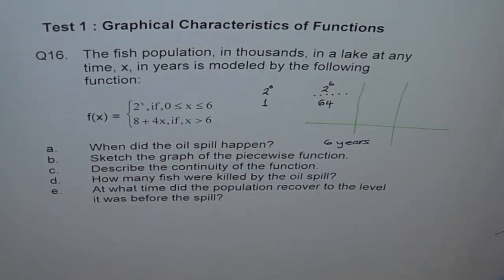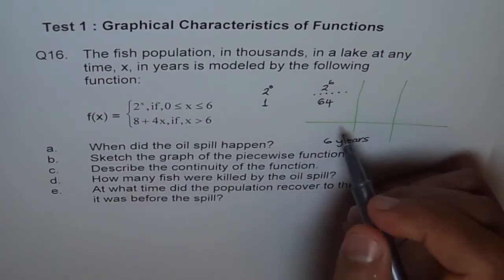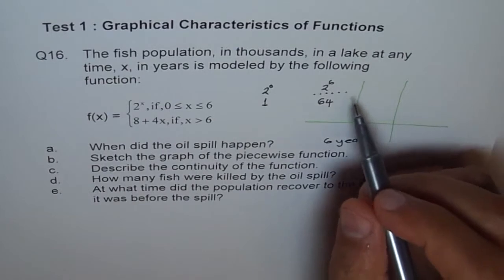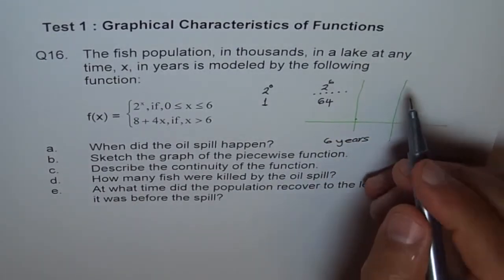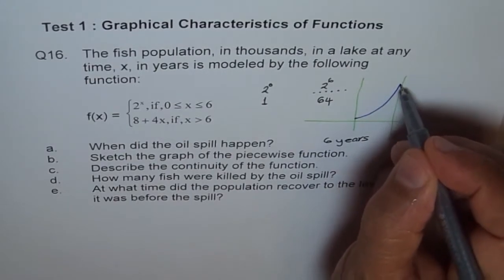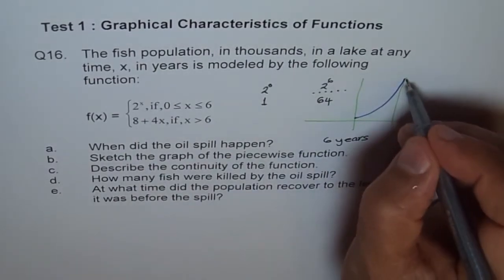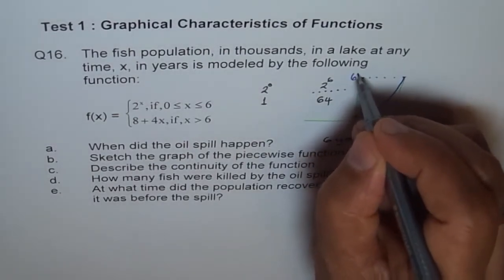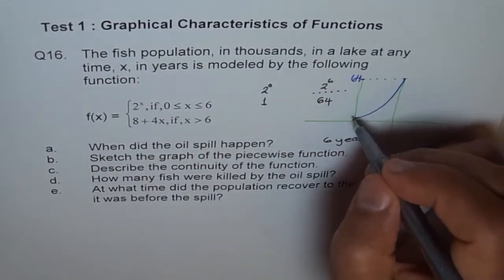To start with, it is at 1. And then in 6 years, it becomes 64. It's going exponentially. Let's assume that the graph goes like this. And let's say this point is 64. All the units are in thousands.